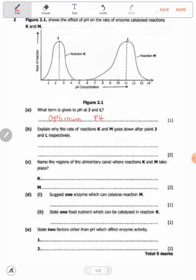Why does it go down just after J and L? In biology, go straight to the point: the enzymes are denatured.